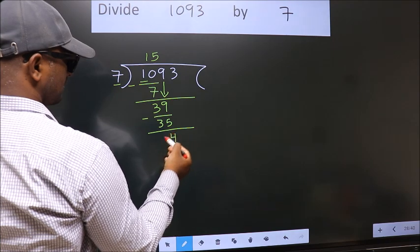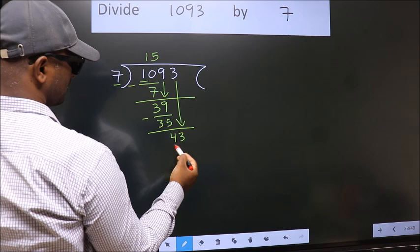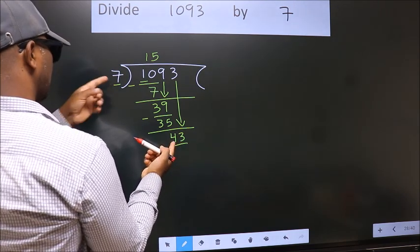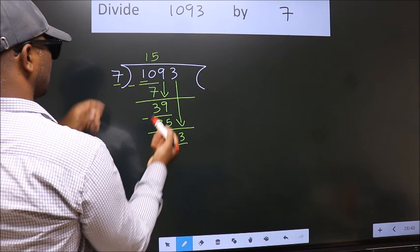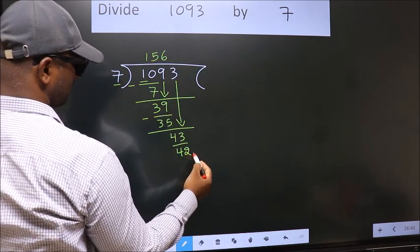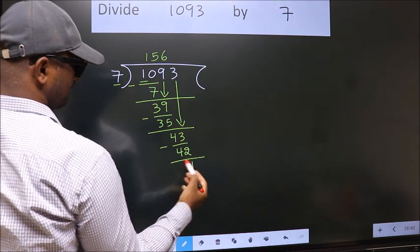After this, bring down the beside number. So 3 down. So 43. A number close to 43 in 7 table is 7, 6, 42. Now we subtract. We get 1.